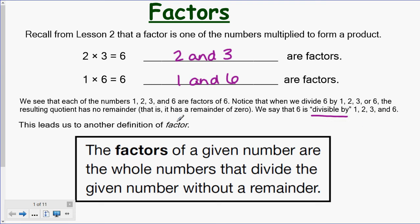This leads us to another definition of factor. The factors of a given number are the whole numbers that divide the given number without a remainder. For example, 4 is not a factor of 6, because if we did 6 divided by 4, we get a remainder. But all these numbers here, 1, 2, 3, and 6, you can divide 6 by any of those numbers and you will not get a remainder.